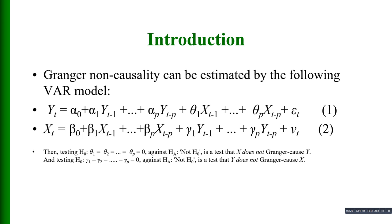Now if you test the null hypothesis that theta_1 = theta_2 = ... = theta_p = 0 against the alternative hypothesis that the null is not true, this is a test that X does not Granger cause Y.